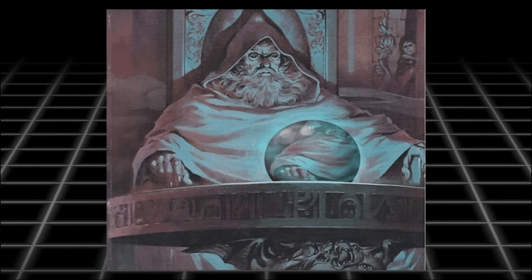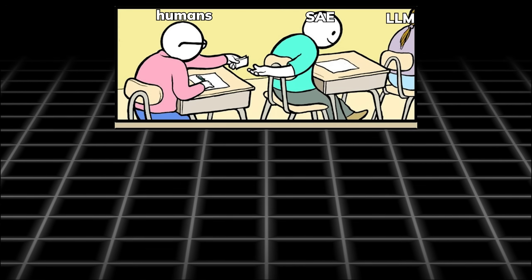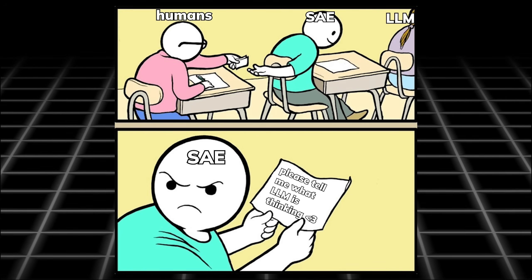And one of the ways that researchers came up with to interpret the neural network is by using something called a sparse autoencoder. Technically, the researchers are asking an AI to explain another AI.